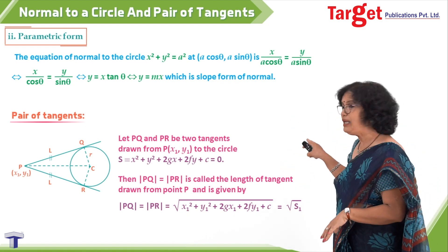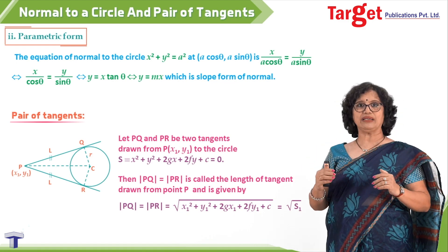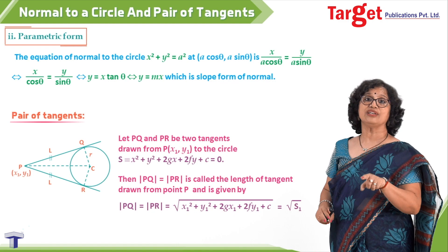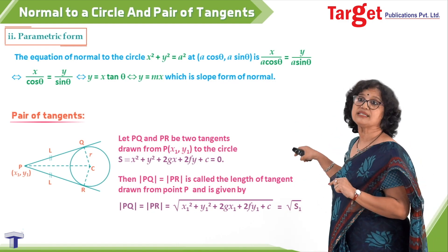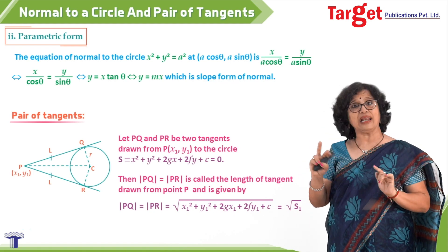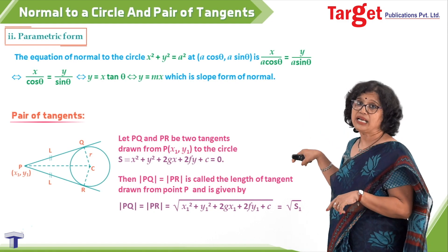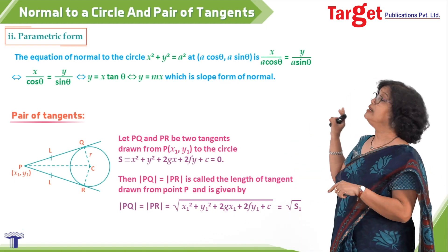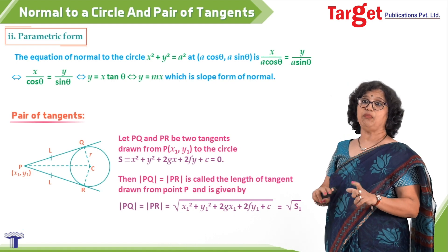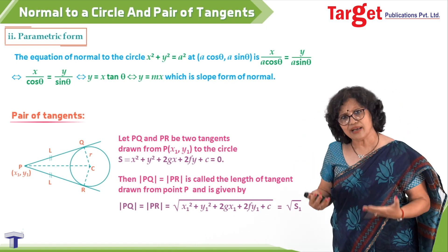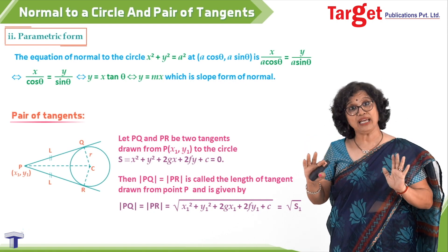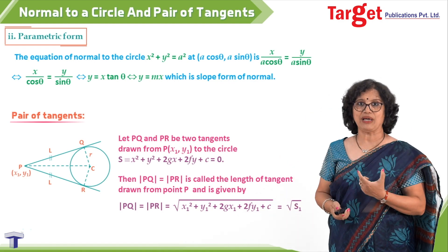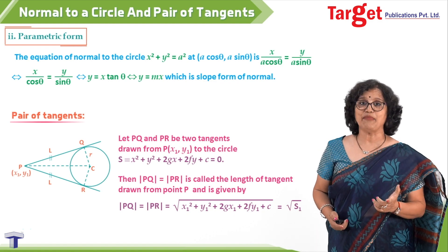I keep repeating this so it gets permanently stored in your mind: if asked to find the length of tangents drawn from a point, the answer is √S1. There is another method: if the radius r is known and point P and center C are given, find distance CP and CQ (which is the radius), then use the right triangle to evaluate PQ. Those not interested in formulae can always use this geometric method.